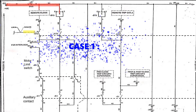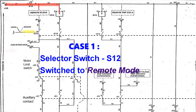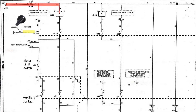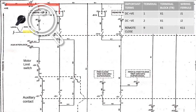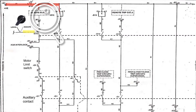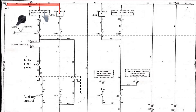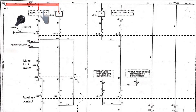Let us consider Case 1 where the selector switch S12 is connected or selected in remote mode. The contacts of S12 in remote mode will be in the position as shown here. Remote close is given at terminal 9 of the X1 terminal block. In remote mode, the selector switch is selected in remote, and at the panel end or in the control room where the panel is placed, the operator operates the switch and performs the closing operation of the circuit breaker.